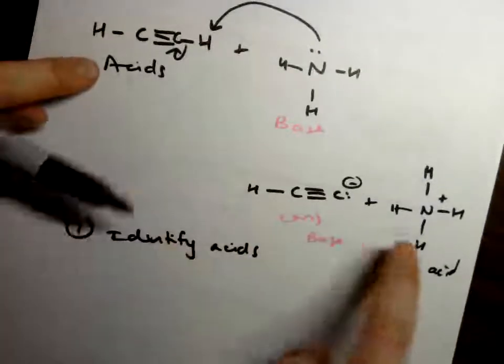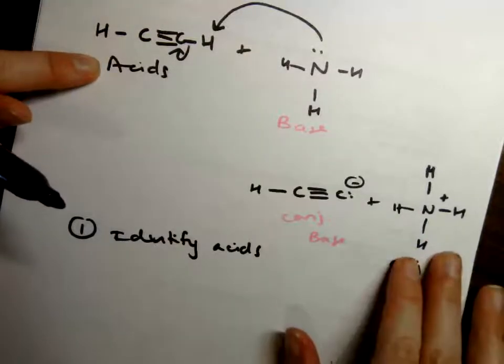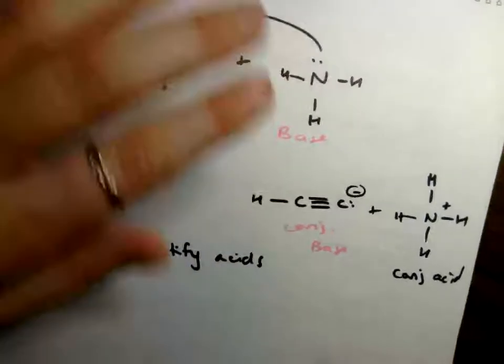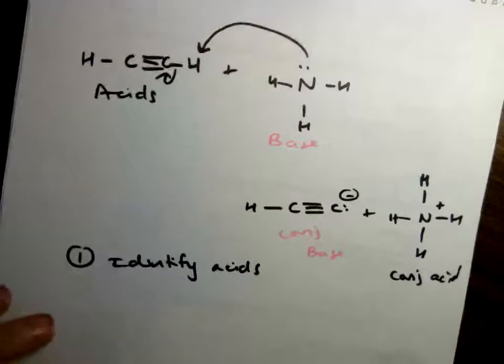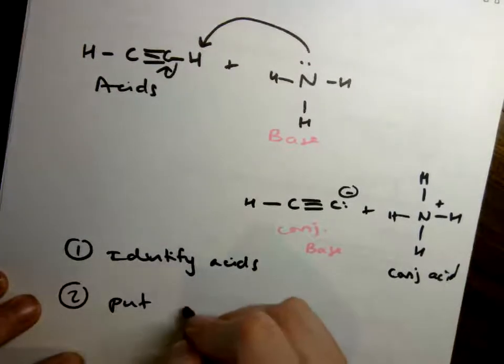So if the reaction were to proceed this way, this loses the proton. The reaction were to proceed this way, this loses the proton. So we're trying to figure out which one is the reaction we're going to proceed. Is it going to favor this side or favor this side? So we've identified our acids. The next step is to put pKa next to them.